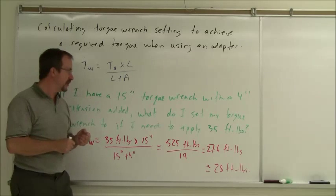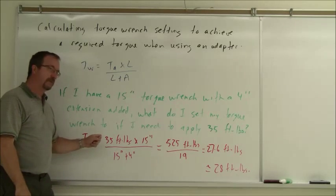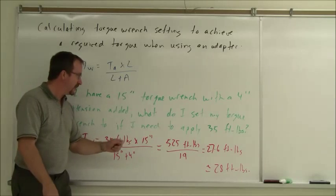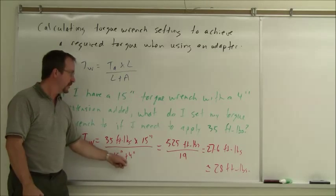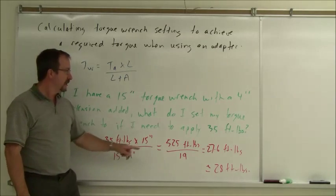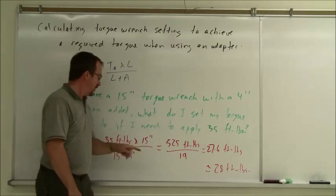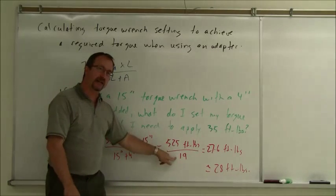So I've got to find out what I'm going to set that wrench to. So, 35 foot pounds times 15 inches divided by the 15 plus 4 inches. The inches units cancel, gives me 525 foot pounds, 35 times 15, divided by 19.